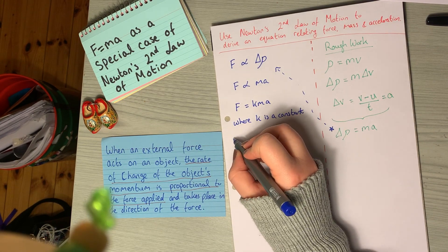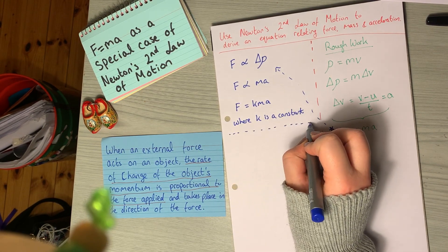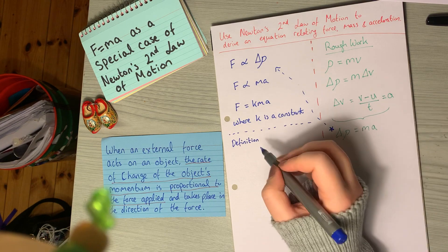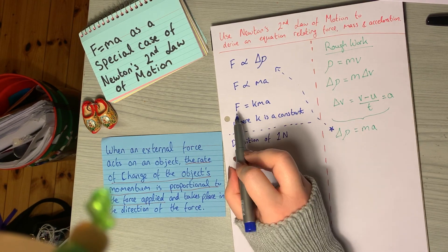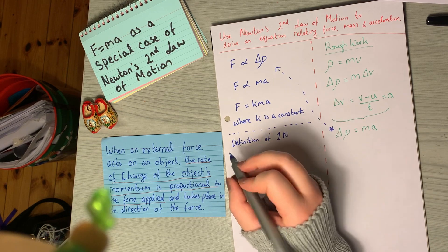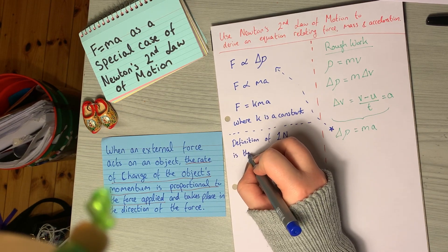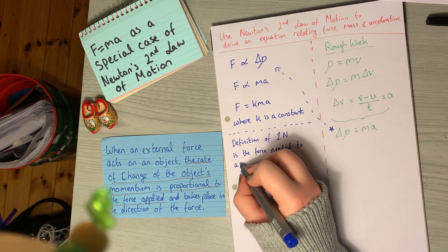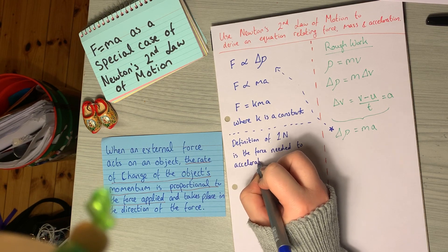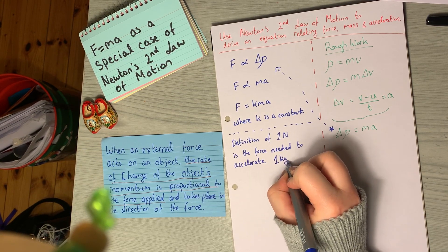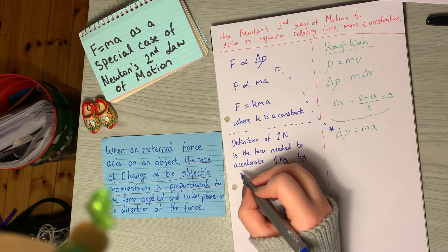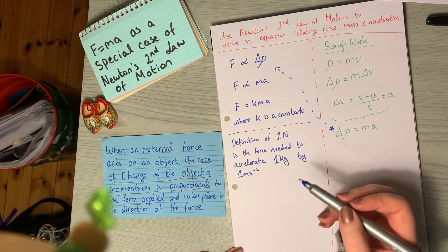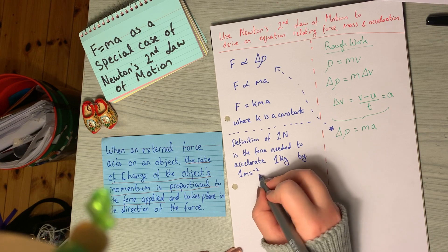To do that, we need to look at the definition of the Newton. Force is measured in Newtons, and the definition of one Newton is the force needed to accelerate one kilogram, so a mass of one kilogram, by one meter per second squared. One Newton is the force needed to accelerate a mass of one kilogram by one meter per second squared.